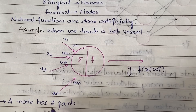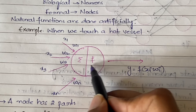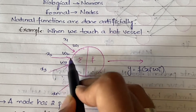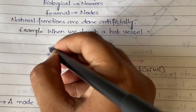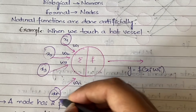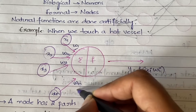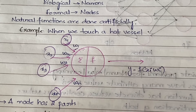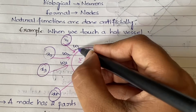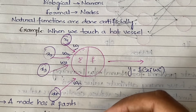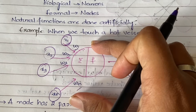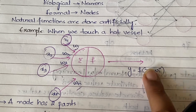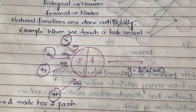In the same way, nodes also do the same thing: they take all the inputs, process them using some function, and generate an output. Now let us see the diagrammatic representation. This is a node, and a node has two parts: one is the summation part and the second is the activation function. The inputs x1, x2, x3 up to xn are the input signals, and w1, w2, w3, wn are their corresponding weights.